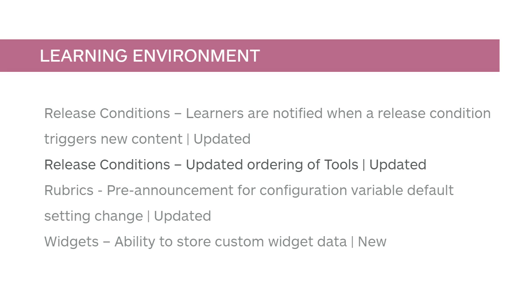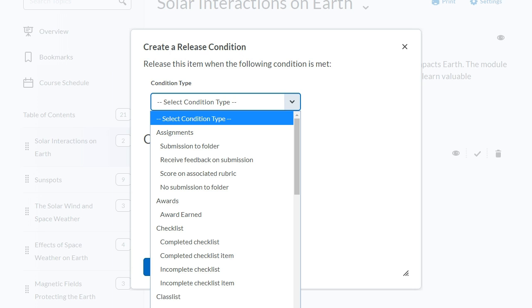When adding release conditions to activities or content, the ordering of tools has been updated. Conditions For and Condition Type menus now display tools in an updated order.